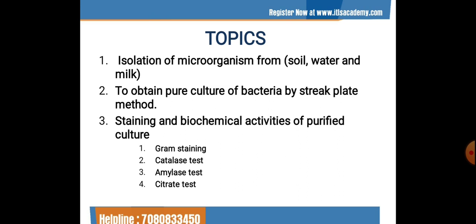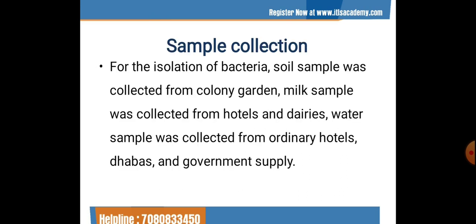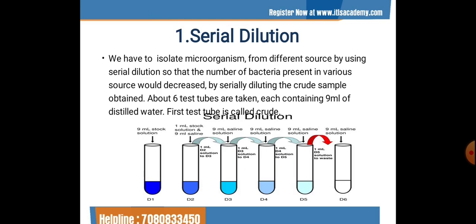The first step is to collect the sample for the isolation of bacteria. The soil sample was collected from a colony garden, the milk sample was collected from hotels and dairies, and the water sample was collected from ordinary hotels, dhabas, and government supply. In order to proceed with the experiment, we first have to learn about serial dilution.